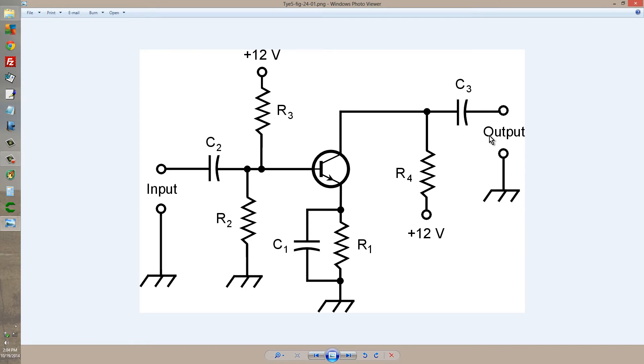C3, which goes to the output. And of course, C3 keeps this bias from disrupting whatever circuit will follow. And this is an NPN bipolar transistor.